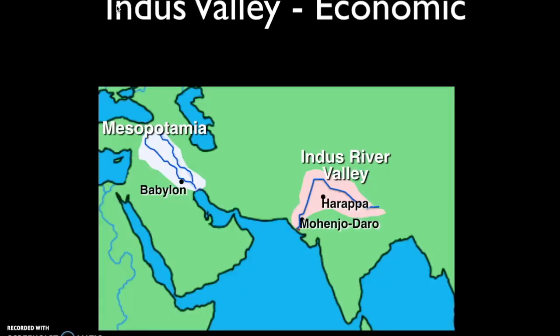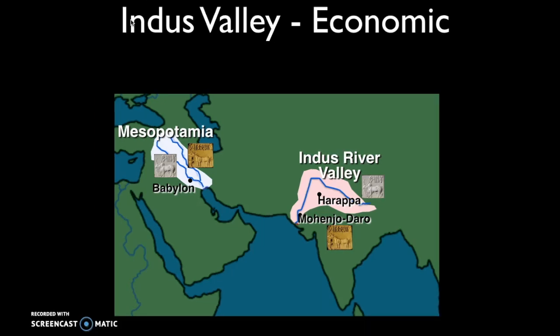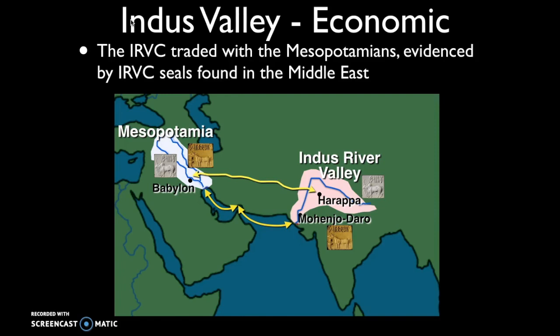Because we know they had a writing system but cannot decipher it, drawing firm conclusions is very difficult. However, one thing we do know is that seals from the Indus River Valley have been discovered as far away as Mesopotamia. The conclusion we can reach is that these seals were likely used in economic activity, indicating that the Indus River Valley civilization was in fact trading with the Mesopotamians.